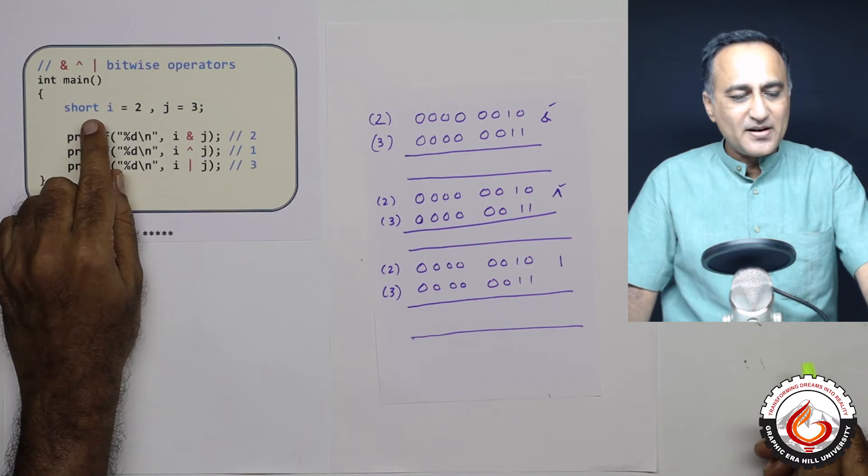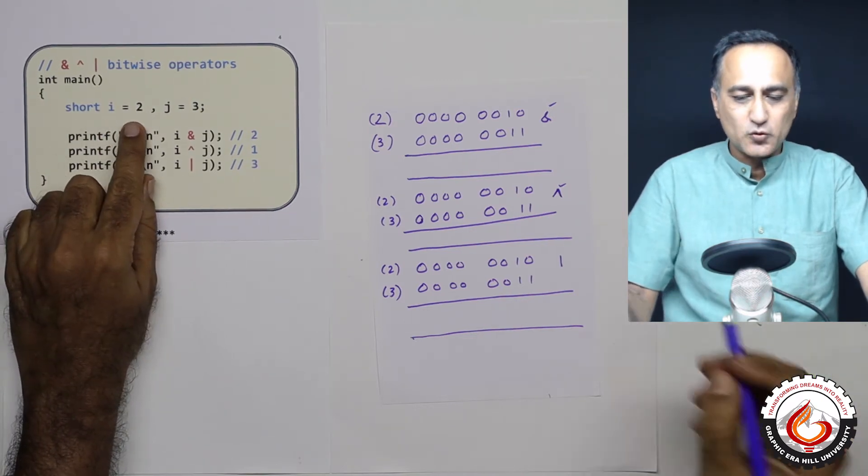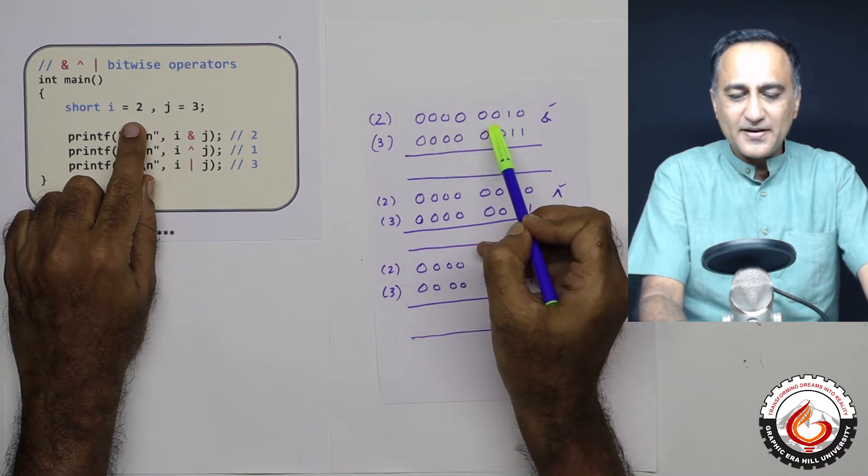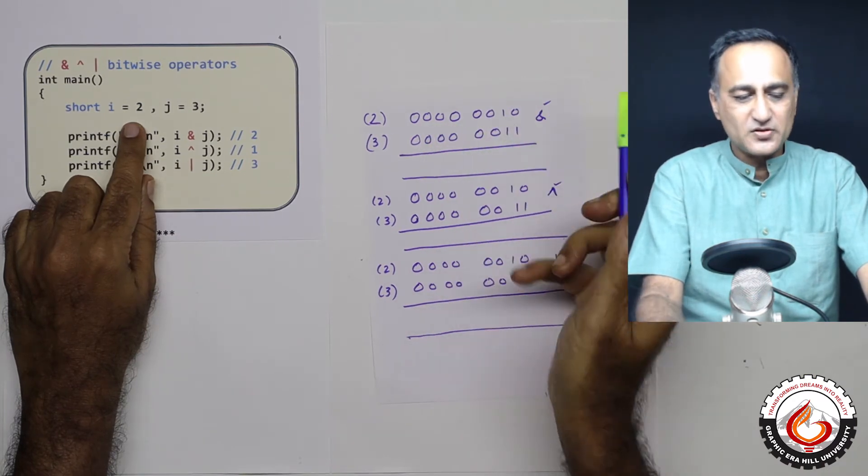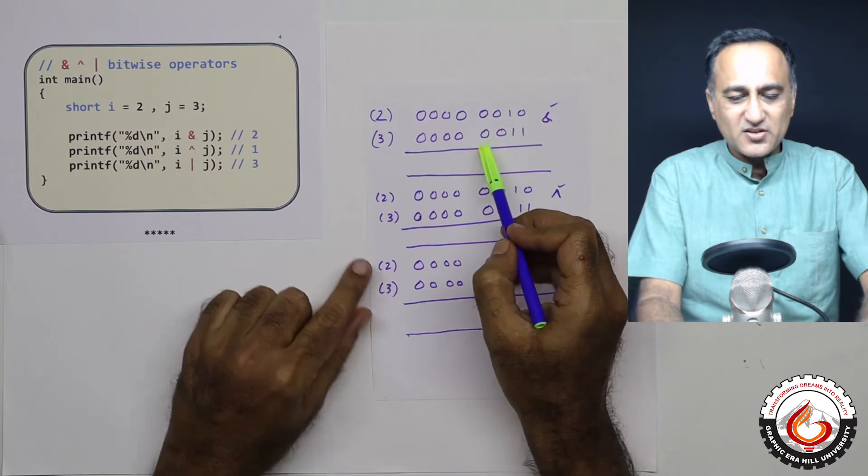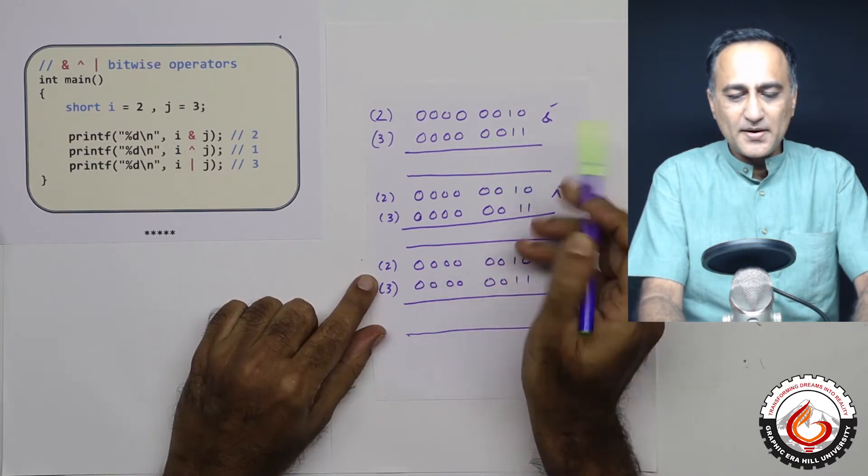I have defined a variable i of the type short whose value is 2. So 2 is defined in binary like this: 0010. J as 3, which is 0011 in binary.